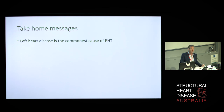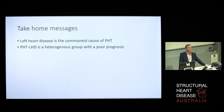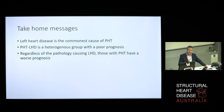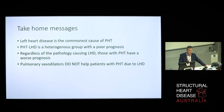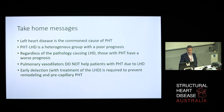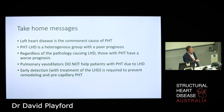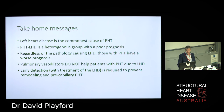Take-home messages. Left heart disease is by far the commonest cause of pulmonary hypertension. It's a heterogeneous group with a poor prognosis. Regardless of whether it's HFrEF, HFpEF, AR, AS, MR, or MS, the prognosis is worse if you have pulmonary hypertension. Most importantly: pulmonary vasodilators do not help patients with PH due to left heart disease. If you're looking for a breakthrough that will help the world, this is the group to work on. But early detection with treatment of the left heart disease is essential to prevent a pre-capillary component that will just make things increasingly worse. Thank you.